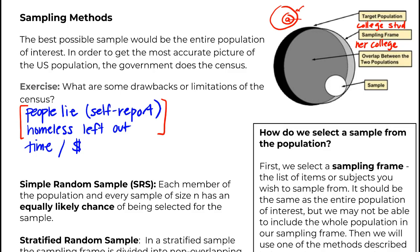That's the idea: there's a step-down where you start with the biggest group, recognize it's unmanageable, and realize you can't get all college students. So you look at your college only, then take a sample of that because that's still huge, and then you look at your data. That's the idea of sampling. In the next video, I'm going to break down some of those sampling methods.